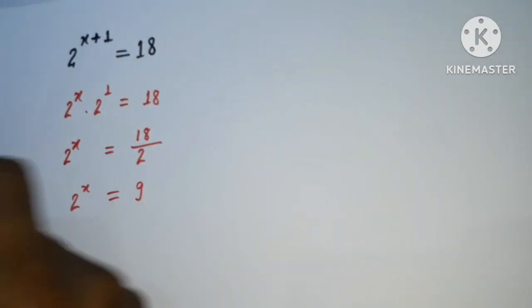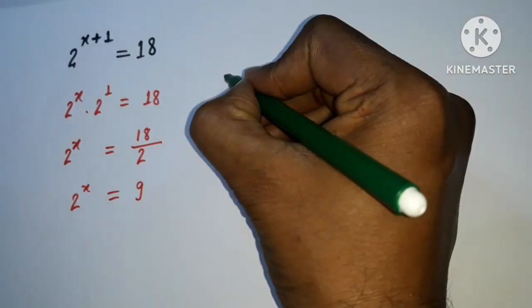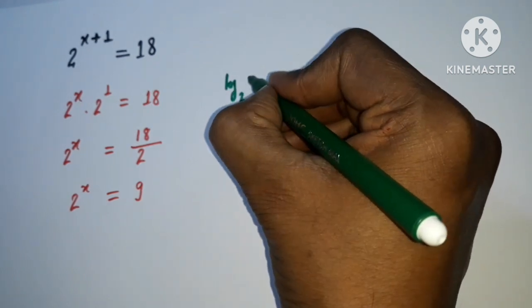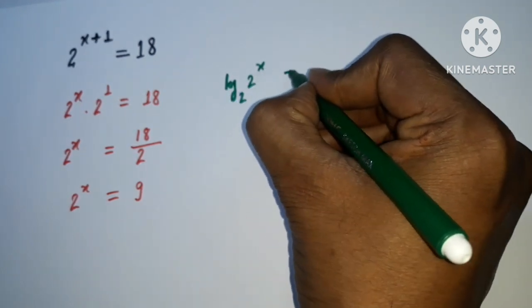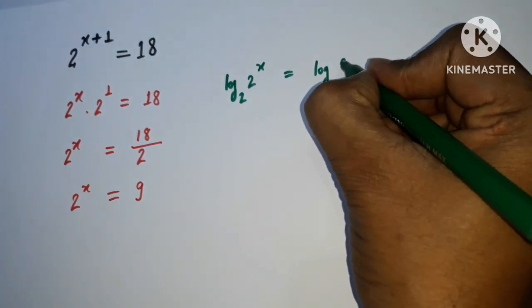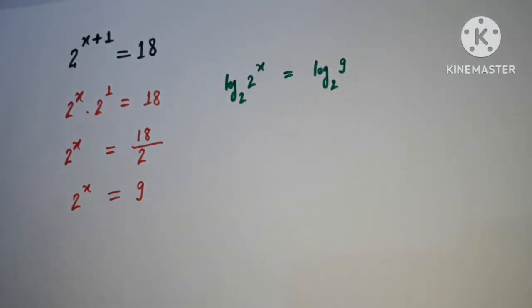We can take log on both sides to solve this question. So we can take log of base 2 on the left side. So it is log base 2 of 2^x, and we can take log base 2 of 9.